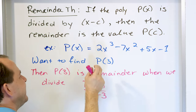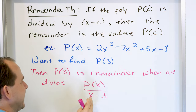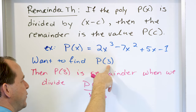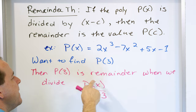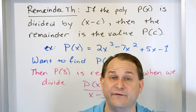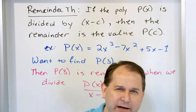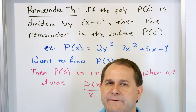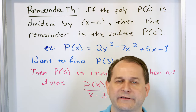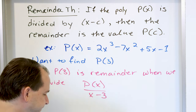But I don't care about the value of the division itself — I only care about the remainder, just that single number at the very end. That number is what I circle, and that's going to be the value p evaluated at c.